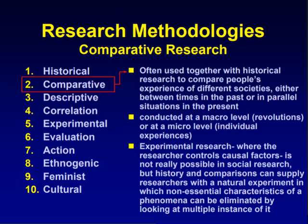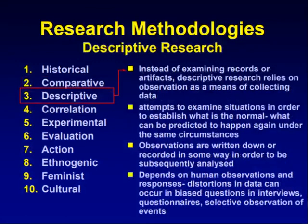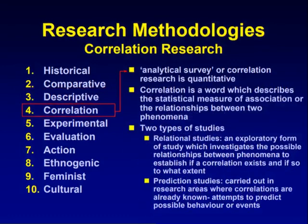In descriptive research methodology, instead of examining records or artifacts, descriptive research relies on observation as a means of collecting data. It attempts to examine situations in order to establish what is normal and what can be predicted to happen again under the same circumstances. Observations are written down or recorded in some way for subsequent analysis. It depends on human observations and responses, and distortions in data can occur through biased questions in interviews, questionnaires, or selective observation of events.